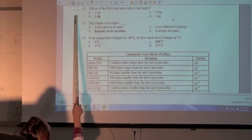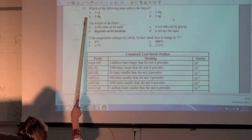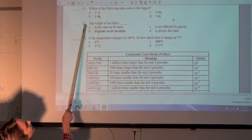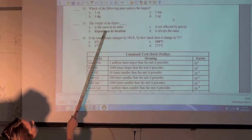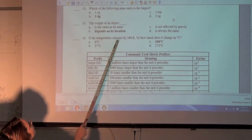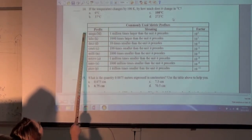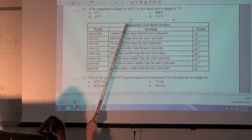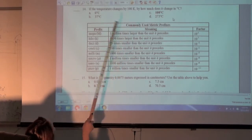Which of the falling mass units is the largest? B, 1 DG. The weight of an object, B, depends on its location. If the temperature changes by 100 Kelvin, by how much does it change in Celsius? 100 degrees Celsius.